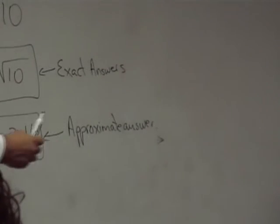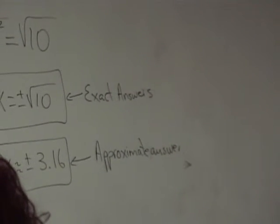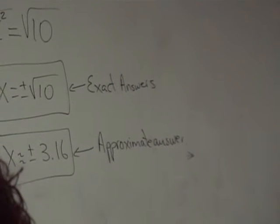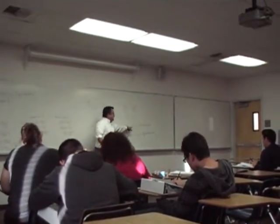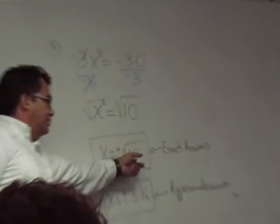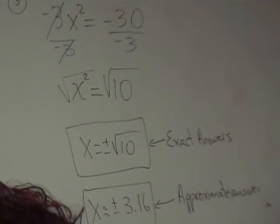Exact answer will have the square root in it if it's not an integer. You wouldn't leave your answer like this. You wouldn't say my exact answer is the square root of 9 because you can simplify that to 3. You will stop here. But in this case we cannot get a nice number out of that, so we would say that's the square root of 10 as our exact answer.